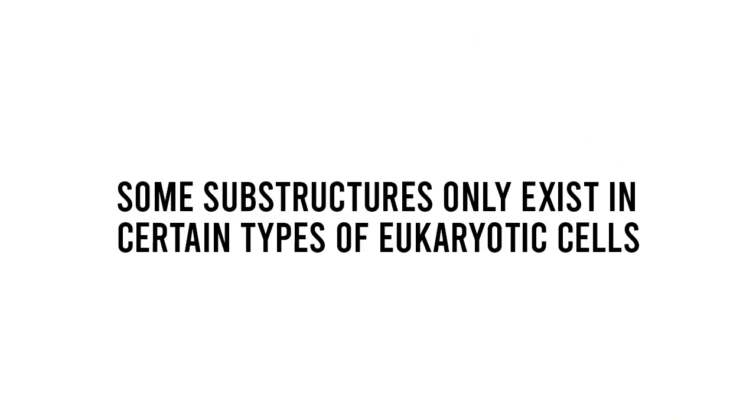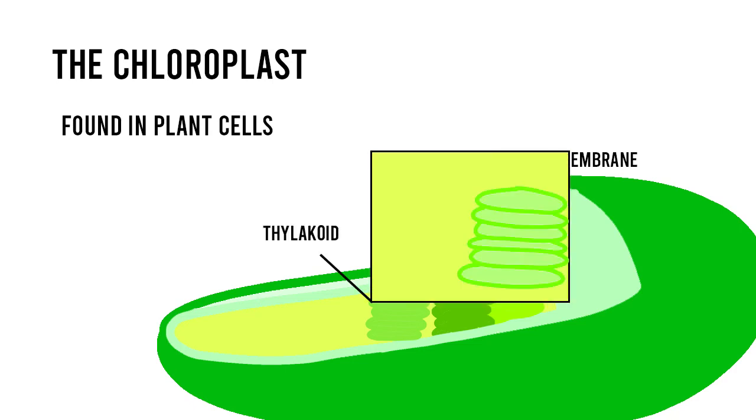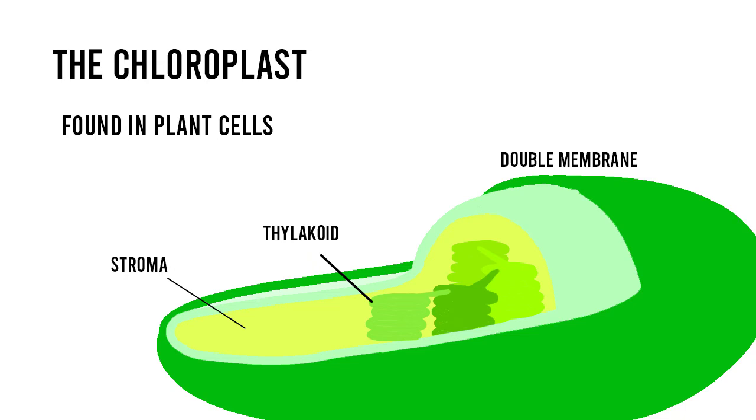There are a few types of substructures that only exist within certain types of eukaryotic cells. For instance, the chloroplast is another double membrane-bound organelle found in plant cells whose various subcomponents allow it to undergo multiple metabolic processes. These subcomponents include the thylakoid, which is made up of organized stacks of grana where light-dependent reactions of photosynthesis occur, the stroma, which is the fluid in the inner membrane of the chloroplast which is responsible for light-independent processes such as the carbon fixation cycle, and the membrane, which forms the outer layers of the chloroplast, which facilitates the electron transport chain.